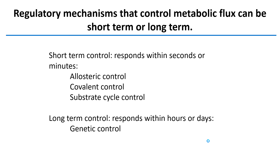In summary, the regulatory mechanisms that control metabolic flux are: allosteric control, where a product of the pathway inhibits or increases enzyme activity; covalent control, where we phosphorylate or dephosphorylate an enzyme to change its catalytic rate; substrate cycle control, where we oppositely regulate enzymes doing opposing activities; and genetic control, which uses increased or decreased transcription of those enzymes. Allosteric, covalent, and substrate cycle control respond within seconds or minutes in the cell, whereas genetic control takes much longer to respond.